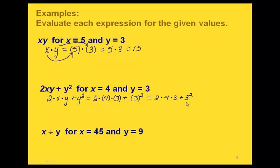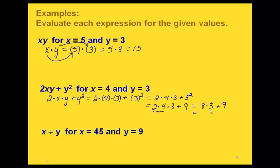Replacing x with 4 and both y's with 3, we get 2 times 4 times 3 plus 3 squared. Using order of operations, we do the exponent first: 3 squared is 9. Then multiplication left to right: 2 times 4 is 8, times 3 is 24. Finally, 24 plus 9 gives us 33.